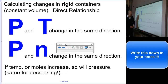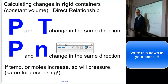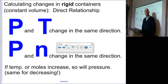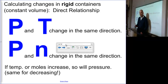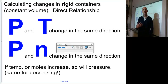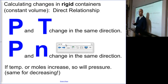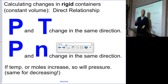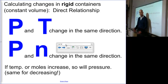When calculating changes in rigid containers, we have a constant volume. These relationships are direct relationships. When your temperature goes up, your pressure must also increase. Remember, temperature is the average kinetic energy of a gas particle. If temperature is going up, we have more motion, a higher likelihood of collision with the container, more collisions, more force, more pressure. Temperature up, pressure up — that's direct. It also works the other way: temperature down, particles move slower, less collisions, pressure goes down.